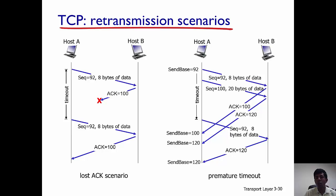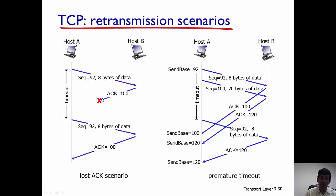The first scenario is a lost acknowledgement scenario. Let's assume that A and B are transmitting segments to each other using TCP. A first sends a segment to B with sequence number 92 and 8 bytes of data. The acknowledgement that comes from B is 100, because an acknowledgement indicates the next byte that B wants to receive from A. Let's assume that this acknowledgement gets lost on its way from B to A.